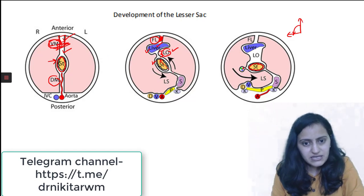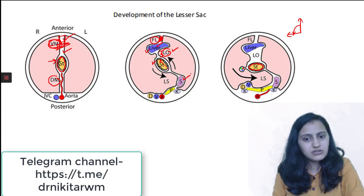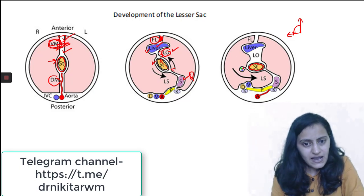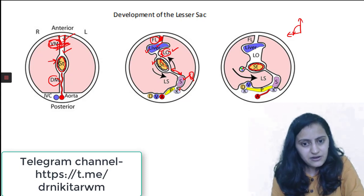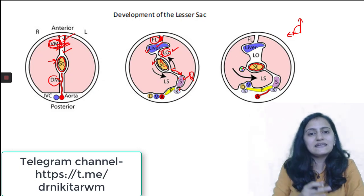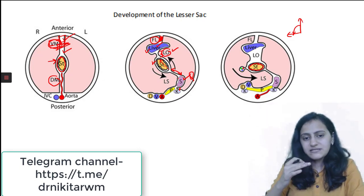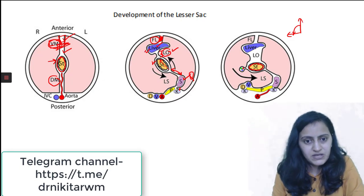In the dorsal mesentery, the spleen is formed — this is a commonly asked question. Spleen is formed in the dorsal mesogastrium. The ligament connecting the stomach and the spleen is the gastrosplenic ligament. The ligament connecting the spleen and the kidney is the lienorenal ligament. So gastrosplenic and lienorenal ligaments are both in the dorsal mesentery or dorsal mesogastrium.